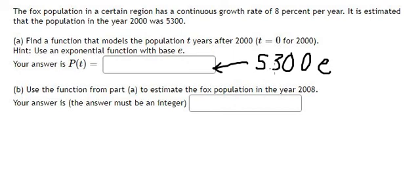We have 5300 multiplied by e to the power of 8% multiplied by T. And this is the formula P(T).